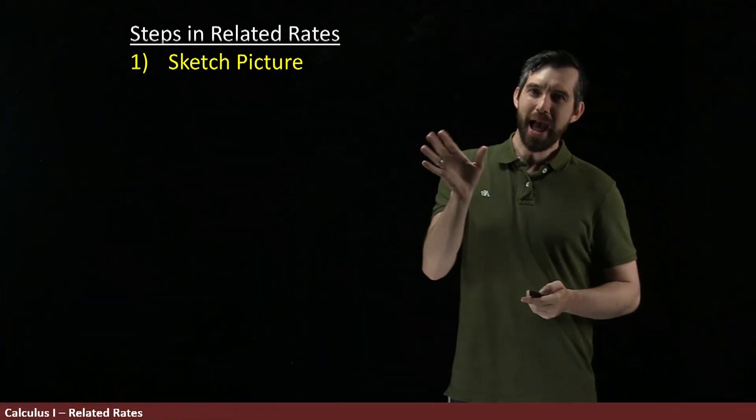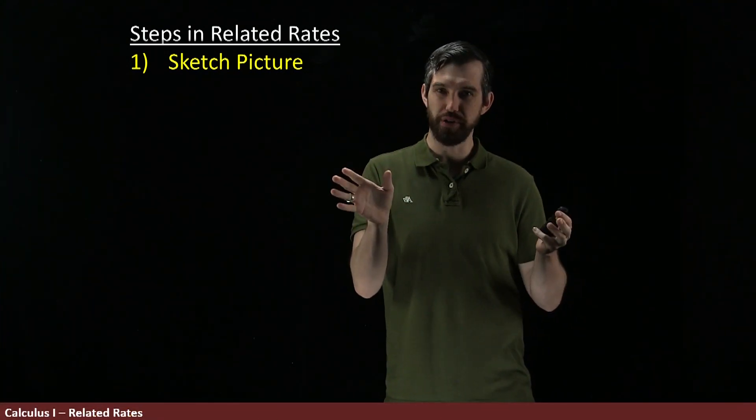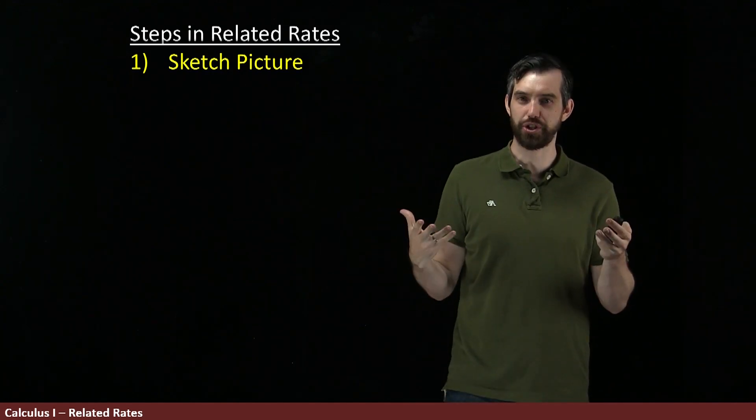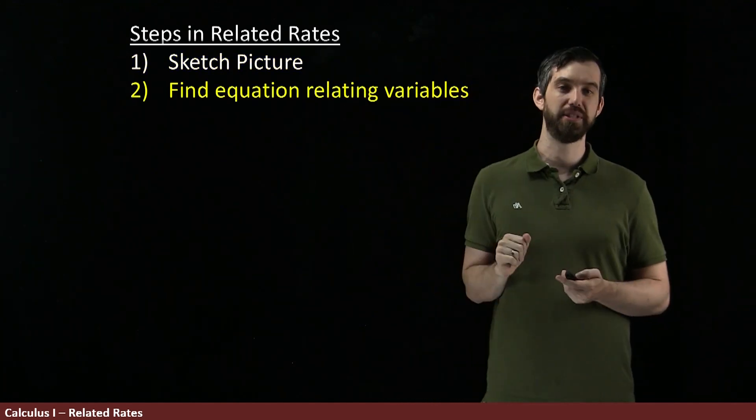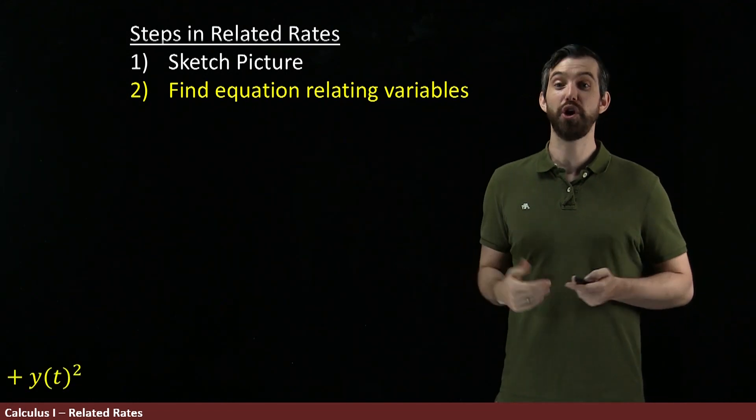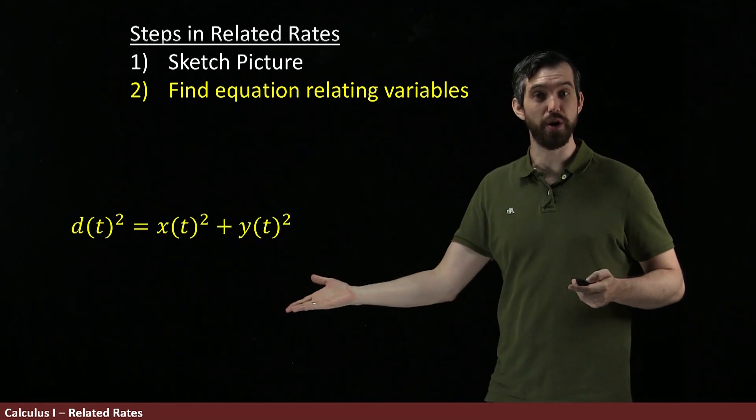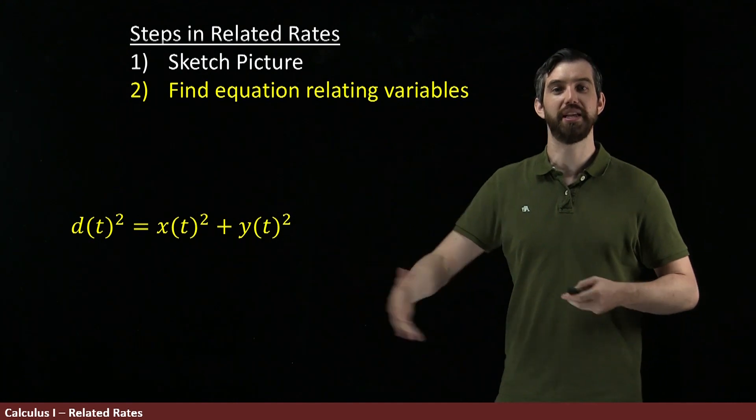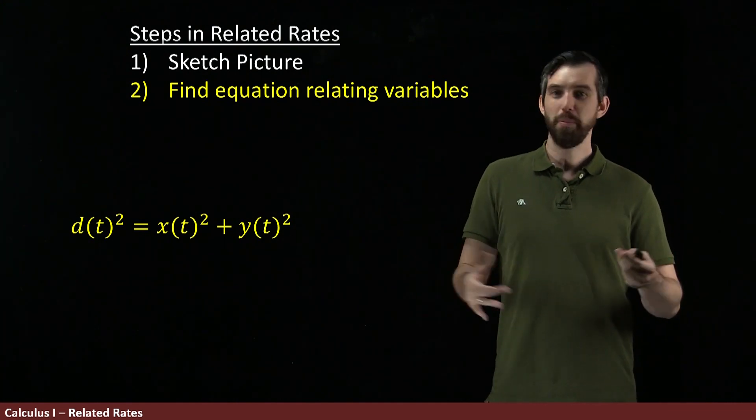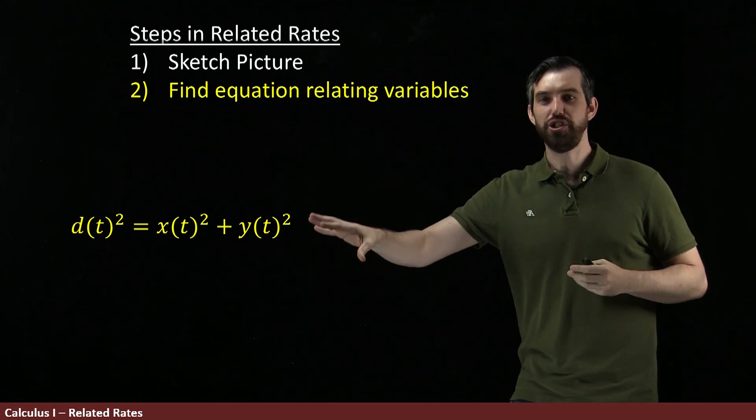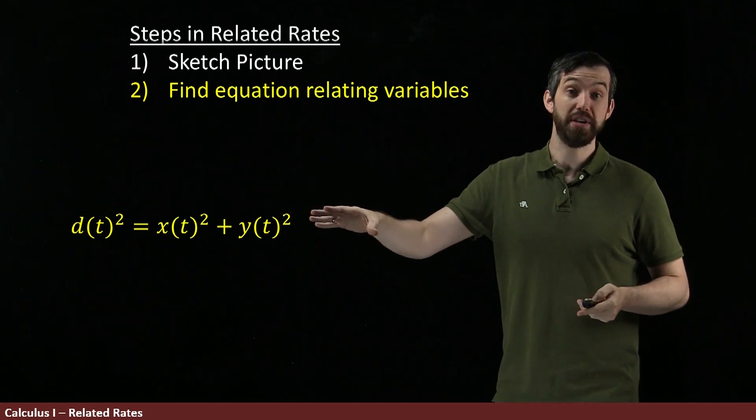And then after you have that nice picture, what you can do is you can try to find some equation that's going to be relating the variables that we're interested in. In this case, it was going to be this relationship that the d squared was the x squared plus the y squared that comes from Pythagoras. But for a different problem, with a different picture, the relationship between the variables might be somewhat different.